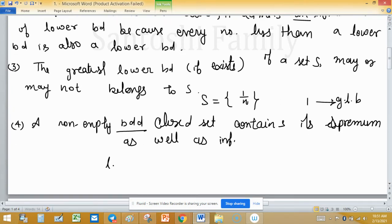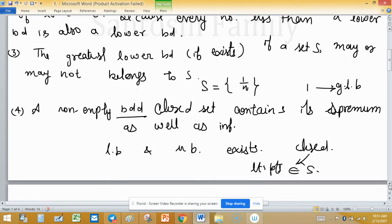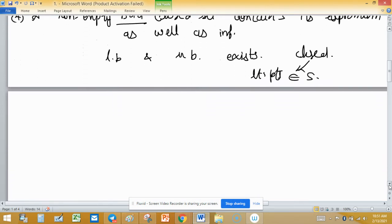If a set is bounded and closed, bounded means lower bound and upper bound exist, and meaning of closed is all limit points in the set belong to S.